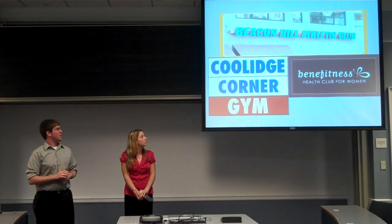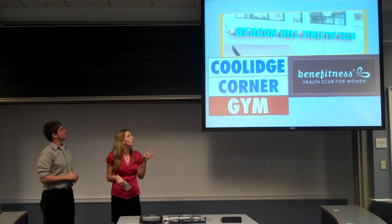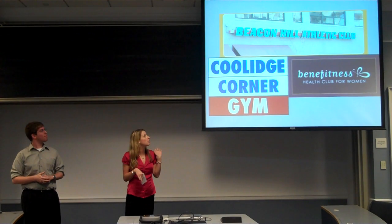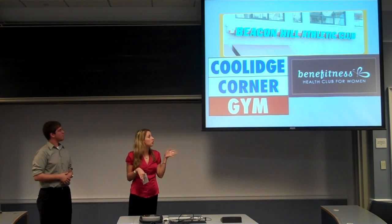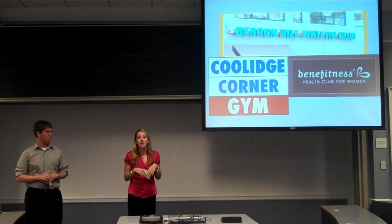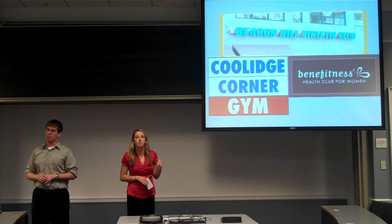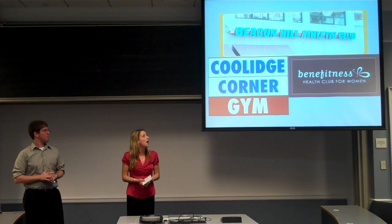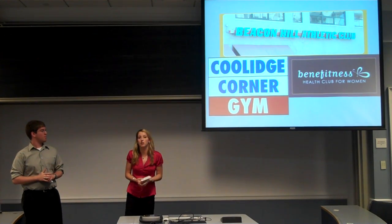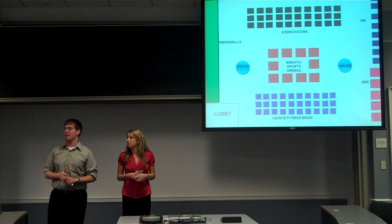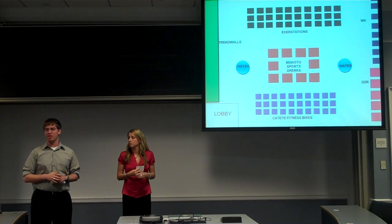These are our three competitor gyms around Brookline: Beacon Hill Athletic Club, Coolidge Corner, and Fitness Unlimited, which is solely for women. Our price is $110 per month, which is sufficiently higher than these three gyms. However, we do offer a new experience, therefore our pricing is more effective. We require yearly memberships that come out to $1,320 per member.